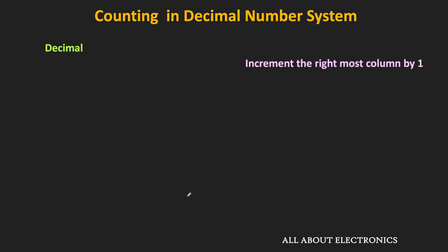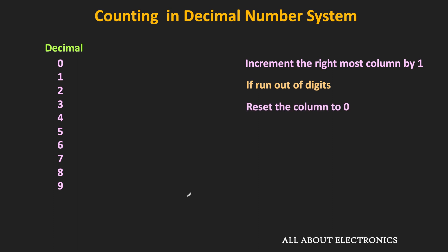In the rightmost column, we start incrementing the number by 1. While counting, if we just run out of digits, then we reset that column to 0 and increment the next column by 1. So that is how we get 10 after 9.